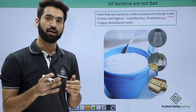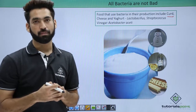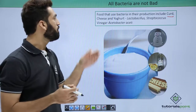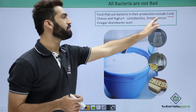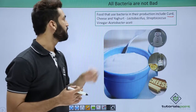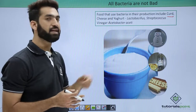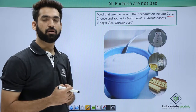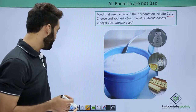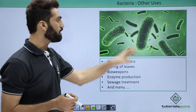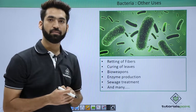Lactobacillus, as part of a group called lactic acid bacteria, is useful for curd production. When you talk about cheese and yogurt production, you have Lactobacillus and Streptococcus. For vinegar, which is acetic acid, an important bacteria called Acetobacter is used for vinegar production.